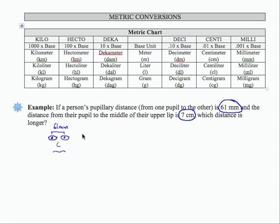And the distance from here to here is on average 7 centimeters. So let's see which one is bigger, 61 millimeters or 7 centimeters.